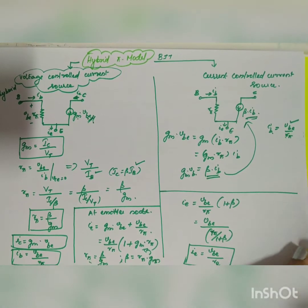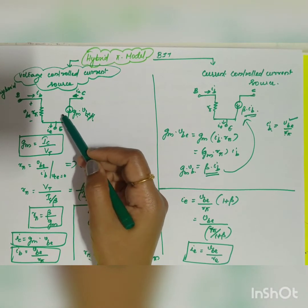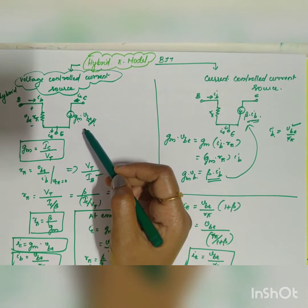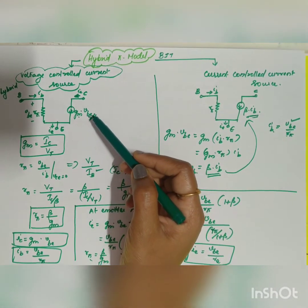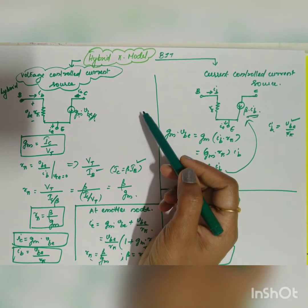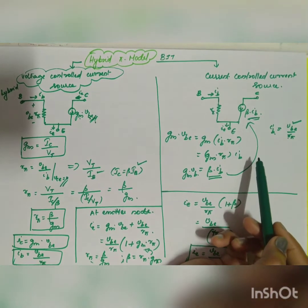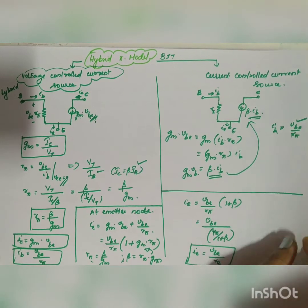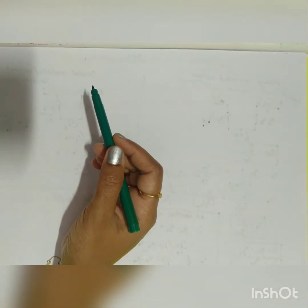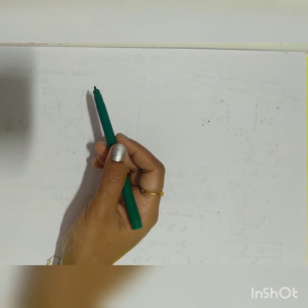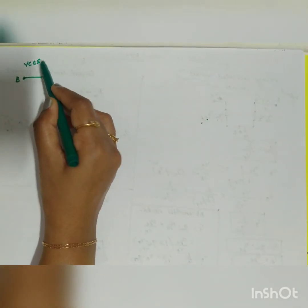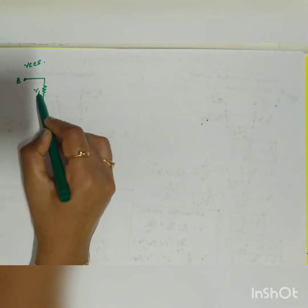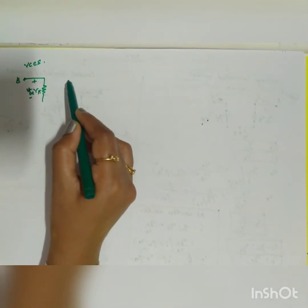The next modification involves the early effect. If you include the early effect, you add one output resistance r_naught to the same diagrams — that is the only difference. The early effect refers to the slight dependence of ic on v_ce due to base width modulation. When vce equals zero, it is not considered; including it modifies both diagrams to include r_naught.